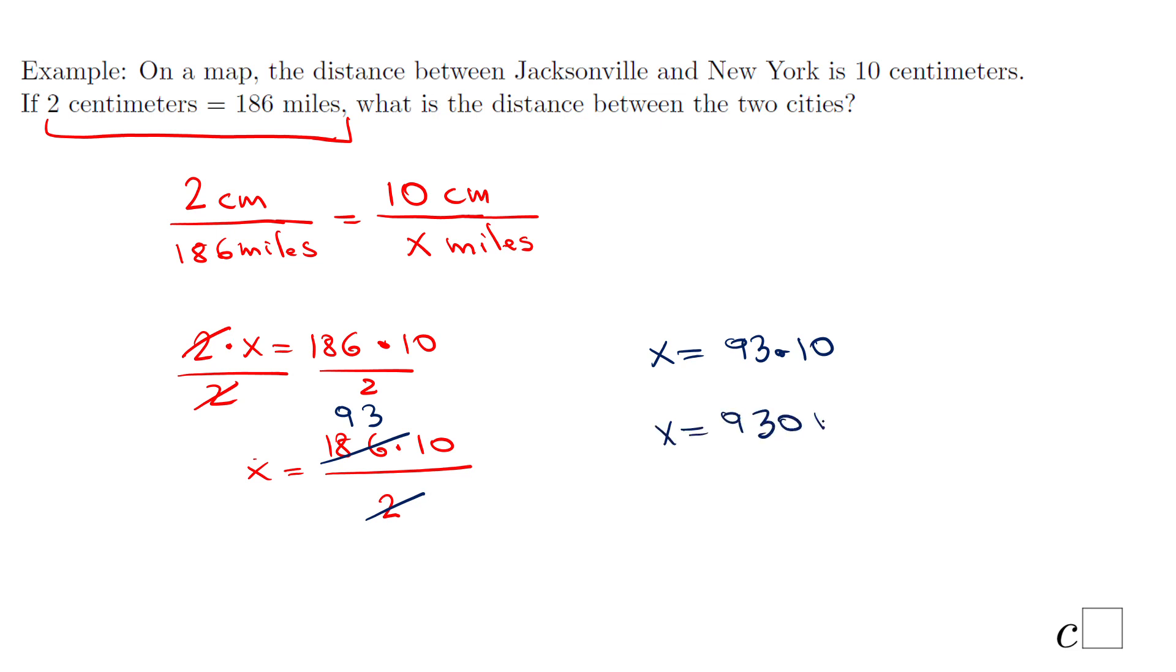And don't forget, this one means miles. So the real distance between Jacksonville and New York is 930 miles. Again, you can go back and see if your answer is reasonable. I think it is. If you enjoyed this lesson, don't forget to click the like button and come back on C-Square for more help. Thank you.